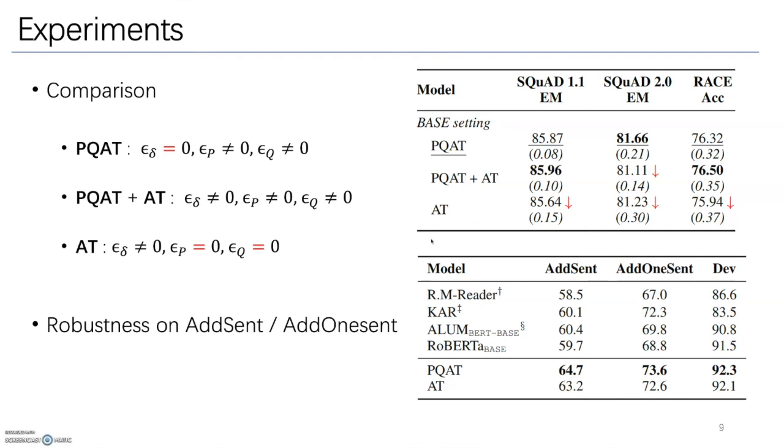Next, we assess the robustness of the model on AddSent and AddSent. With the standard adversarial training, the model improves its robustness by about 5% over RoBERTa base. PQAT further improves the performance over AT by about 1%.